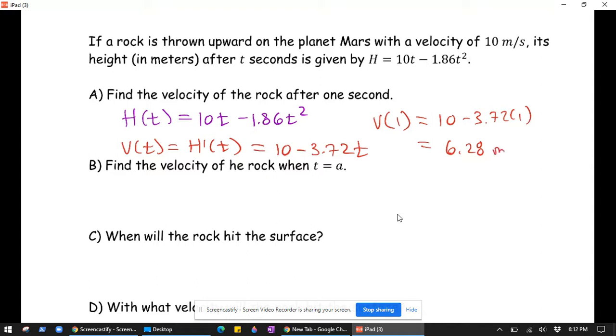And the units would be meters per second. Find the velocity of the rock when t equals a. Well, we've already found the velocity in terms of time. So v of a would just be 10 minus 3.72a.